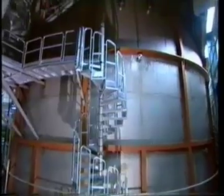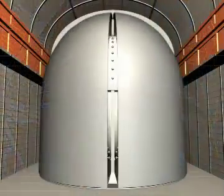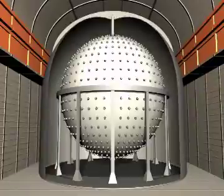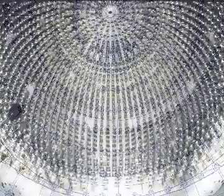It consists of a big steel sphere with 2,200 phototubes, extremely sensitive eyes, able to capture photons emitted by the rare interactions of neutrinos with the liquid inside the sphere.